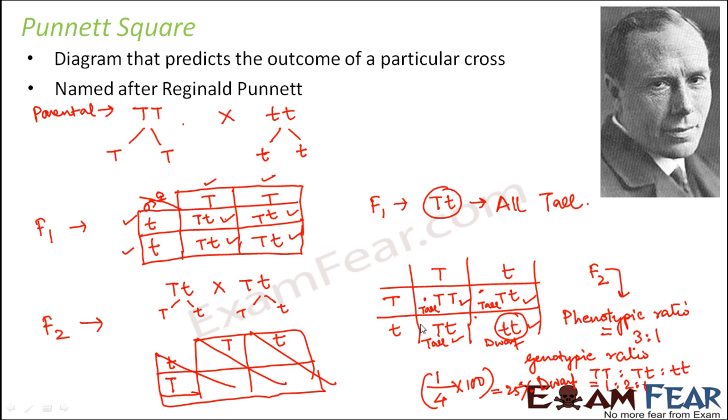The phenotypic ratio, genotypic ratio, how many percentage will have a specific phenotype or a genotype. So you can actually conclude everything just looking at the Punnett square. So all you have to do in order to draw the Punnett square is you need to determine the gametes. Once you know the gametes, you can actually prepare the Punnett square.